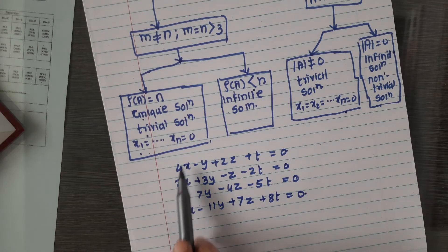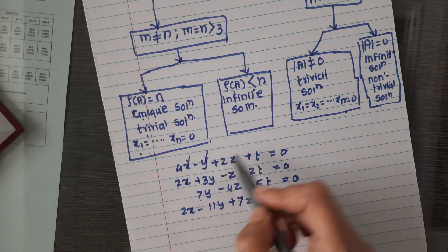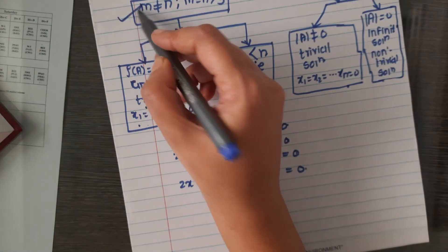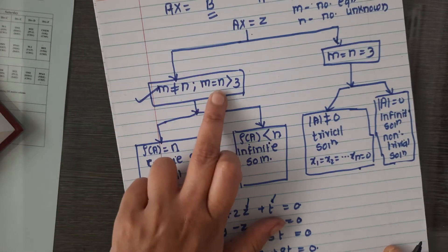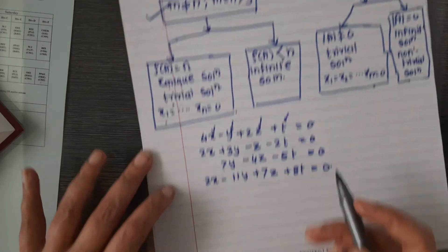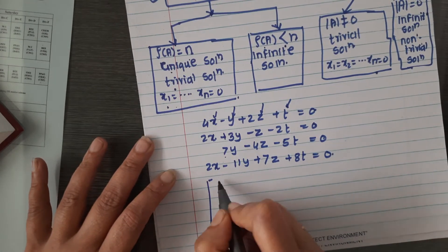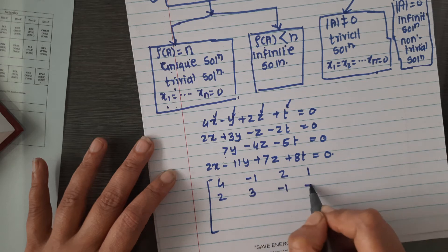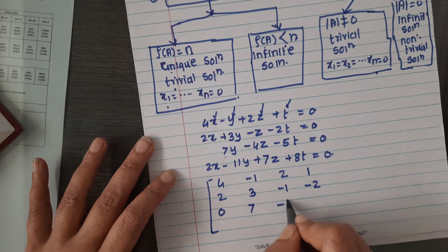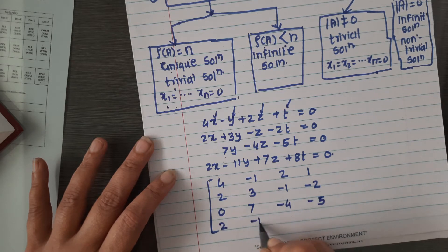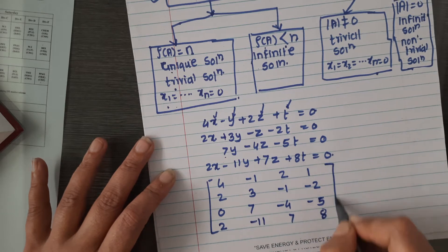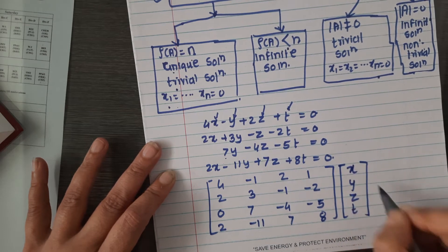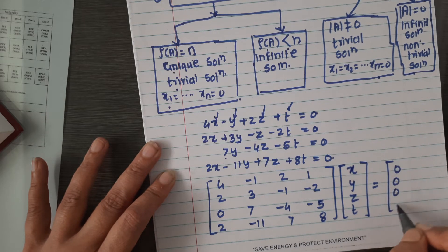This system has four equations and four unknowns: x, y, z, and t. Since m equals n equals 4, which is greater than 3, we write the system in matrix form: the coefficient matrix is [4, -1, 2, 1; 2, 3, -1, -2; 0, 7, -4, -5; 2, -11, 7, 8] times the unknown vector [x, y, z, t] equals [0, 0, 0, 0].